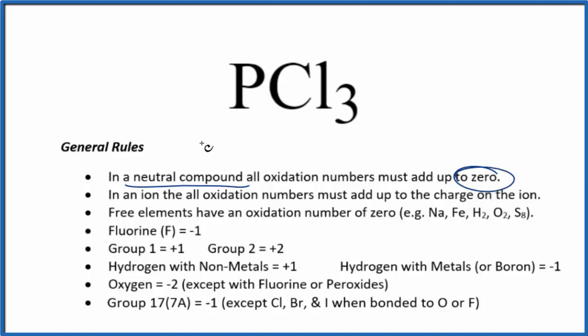If we look for phosphorus, we don't really see it here, but we do see chlorine. That's in group 17, sometimes called 7a, and it'll have a negative 1 oxidation number with just a few exceptions, and phosphorus is not one of those. So each chlorine has an oxidation number of minus one.